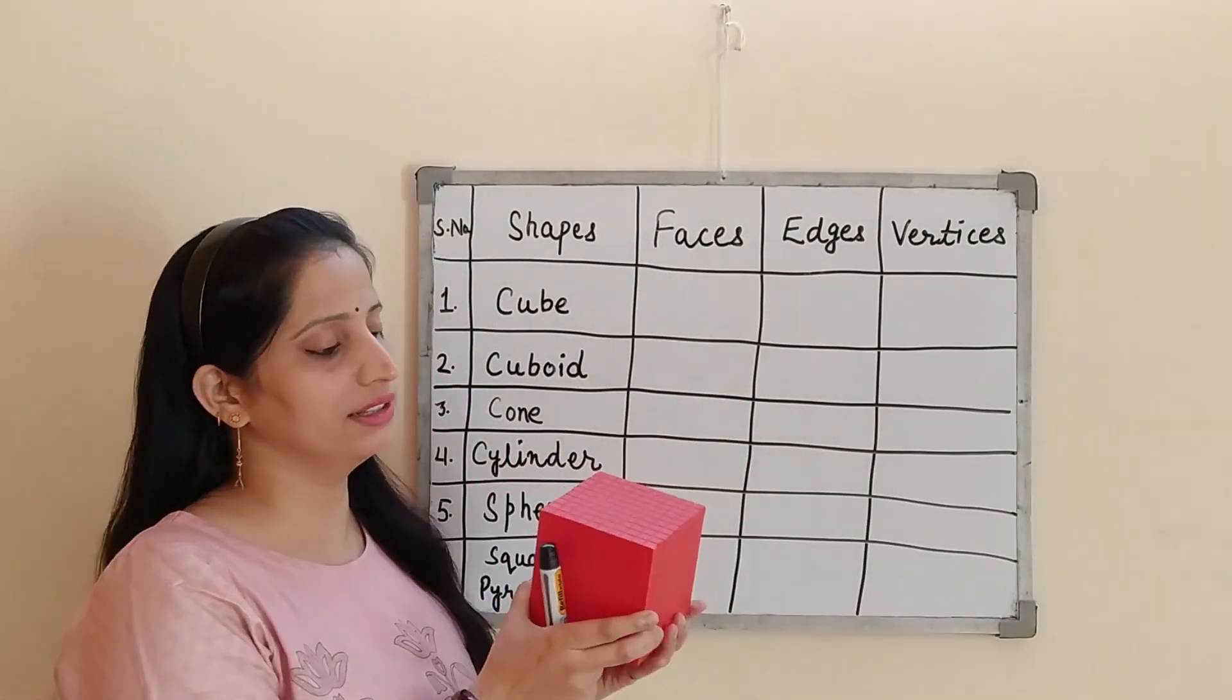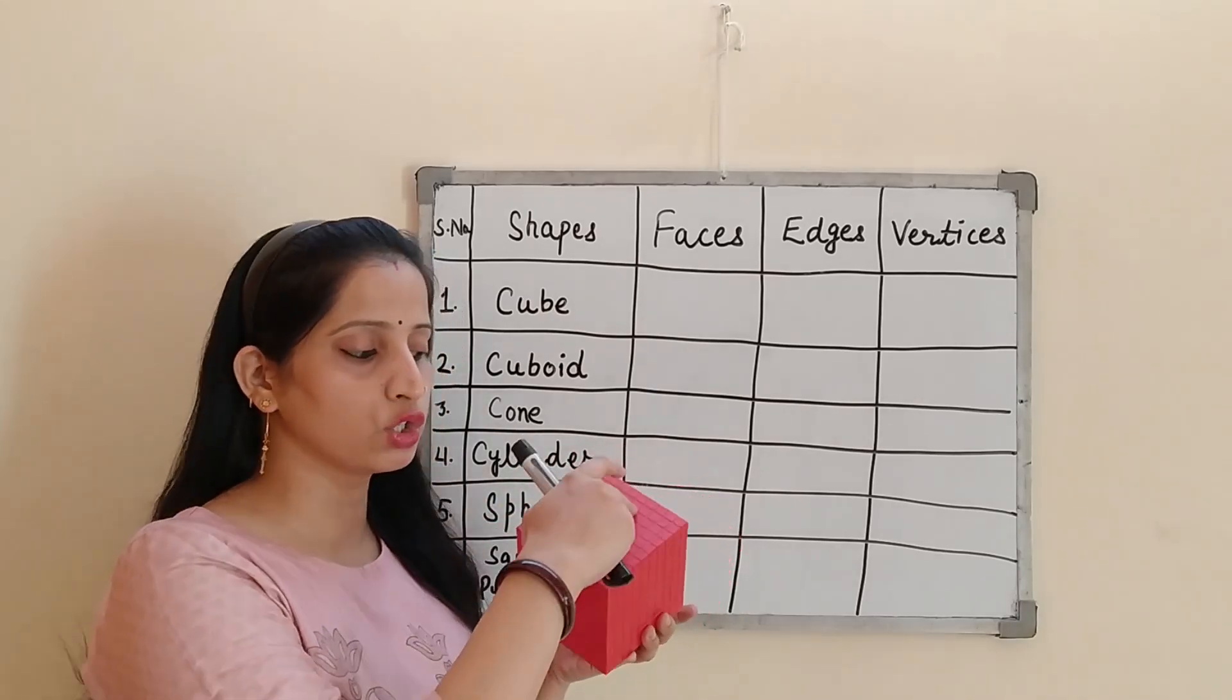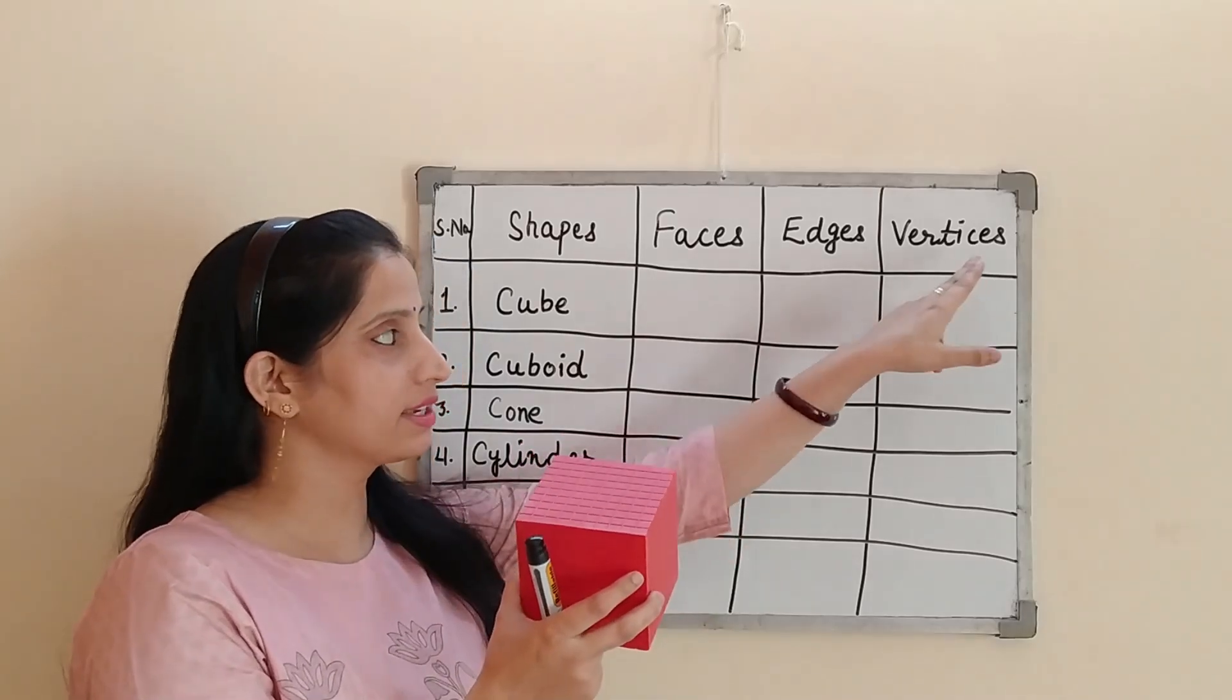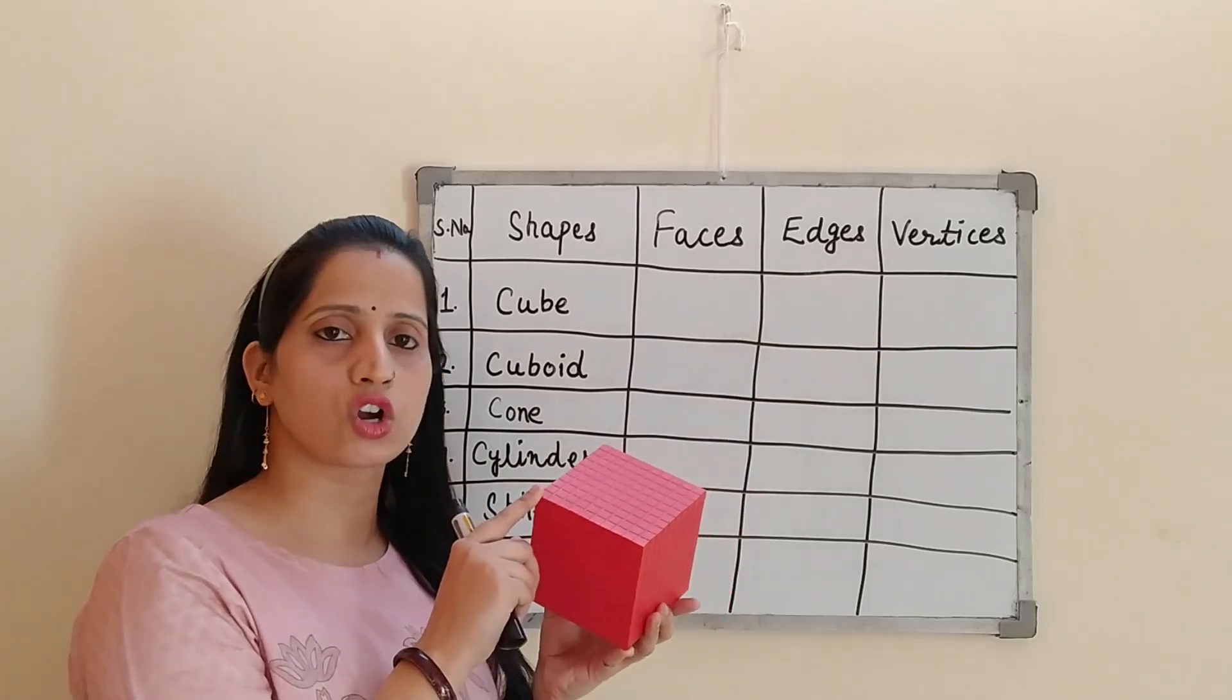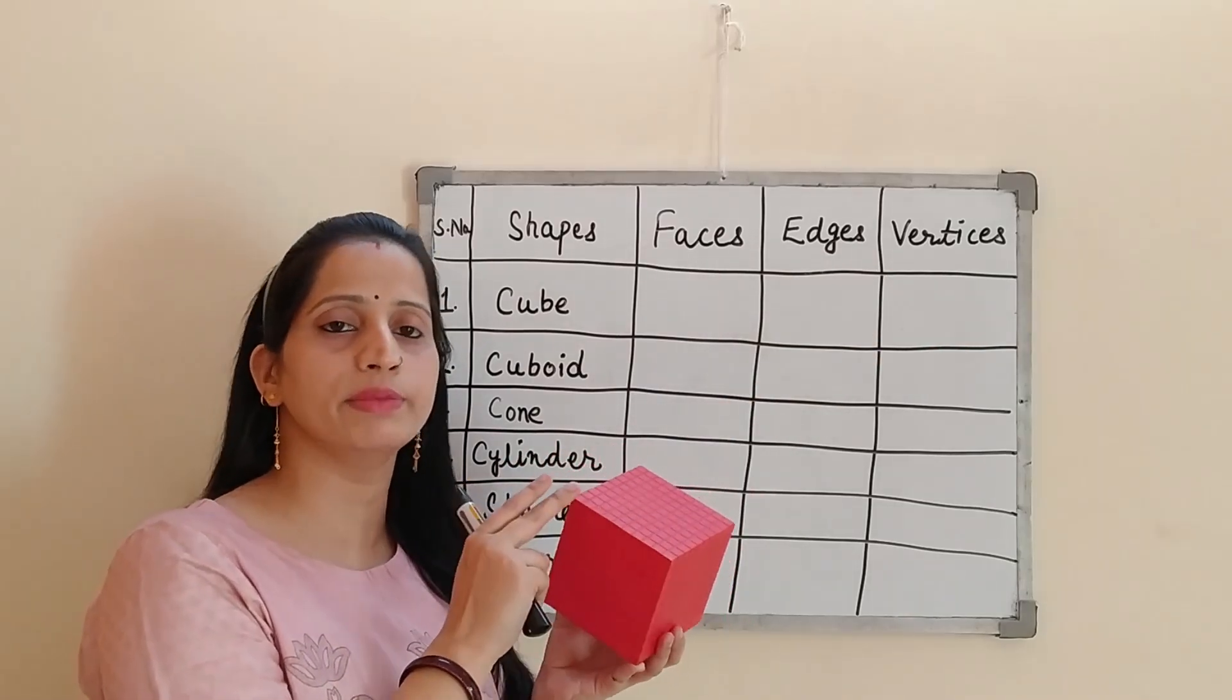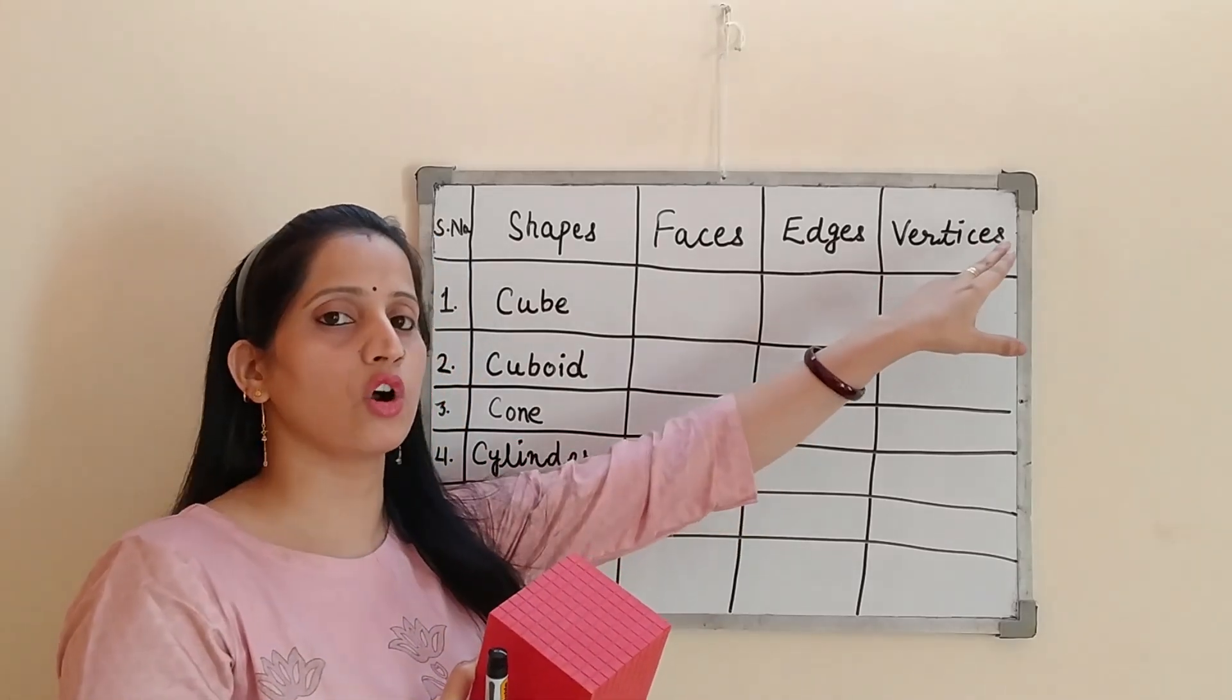Edge, these are the edges. Edge is a line sequence where two faces meet with each other. And vertex, vertex is singular form. Vertices is the plural form of vertex. A vertex is a corner where three or more edges meet with each other. Vertices are also called corners.